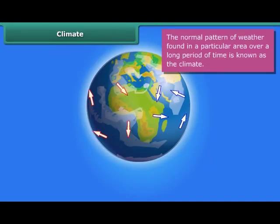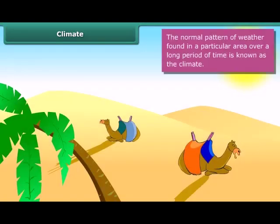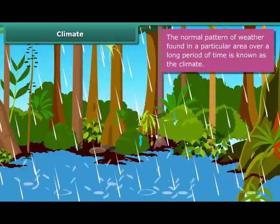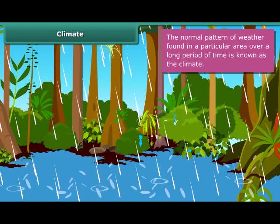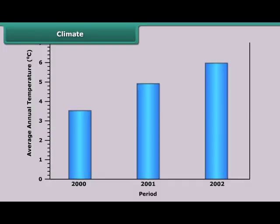Let us understand how climate is different from weather. The average weather pattern taken over a long time, say 25 years, is called the climate of a place. If temperature at a place is high most of the time, it is said to have a hot climate. If it has heavy rainfall in addition to high temperature, then we say that the climate of that place is hot and wet. For recording climate conditions, the mean temperature of a given month for a particular place is found by calculating the average of the temperatures recorded during the month.